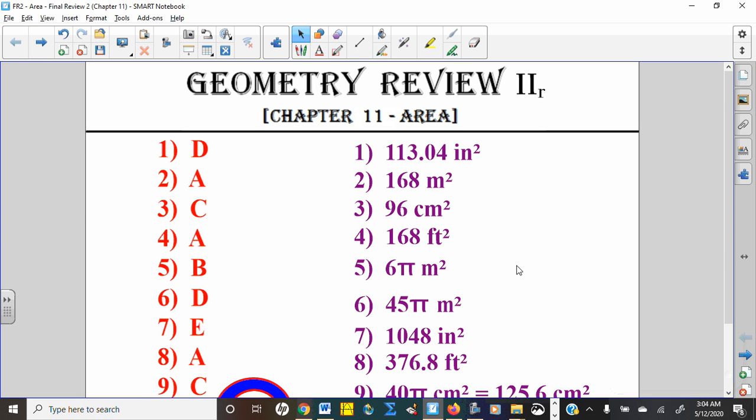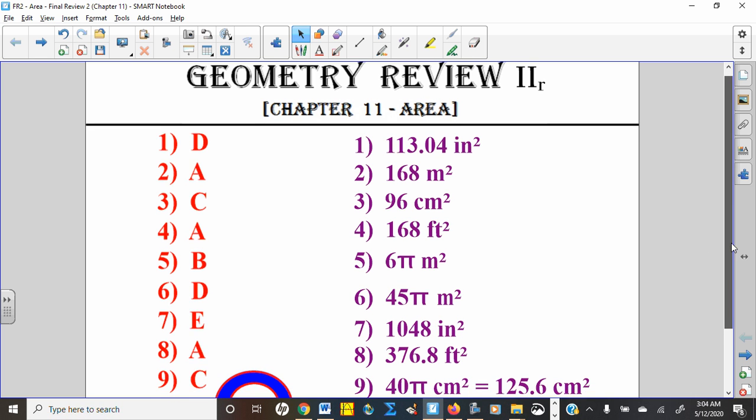All right, we're looking at the second semester review covering chapter 11, which was area. This is what we did after triangles through a couple weeks of February. There were nine multiple choice questions, and you can see them right there.